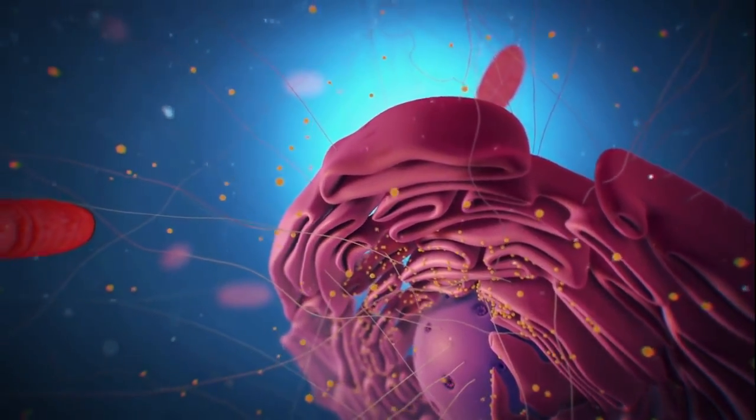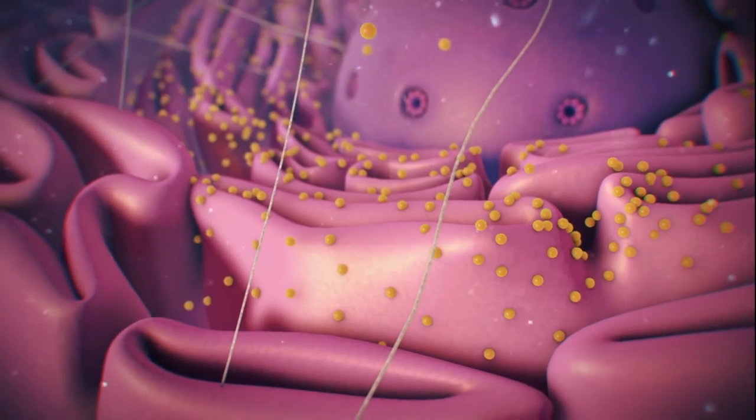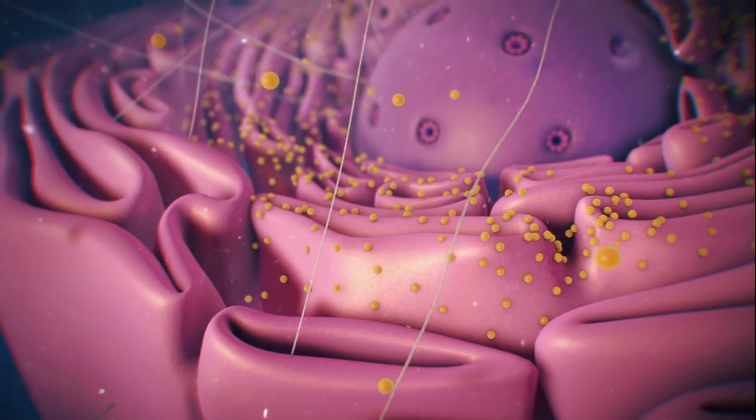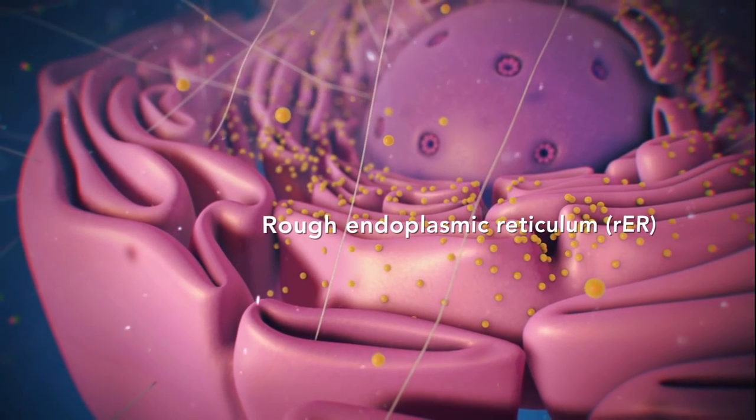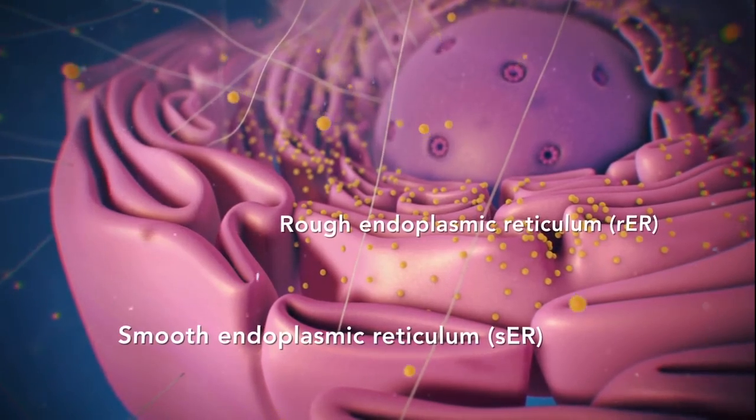Ribosomes may wander freely within the cytoplasm or attach to the endoplasmic reticulum, sometimes abbreviated as ER. There are two types of ER. Rough ER has ribosomes attached to it, and smooth ER doesn't have ribosomes attached to it.